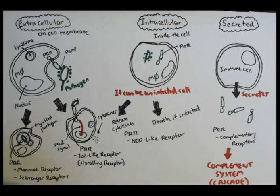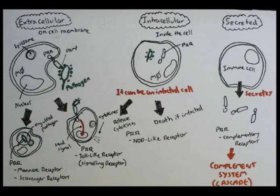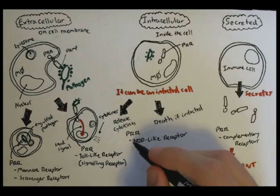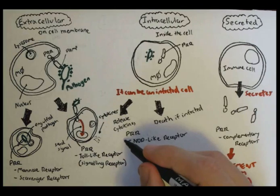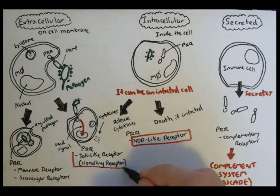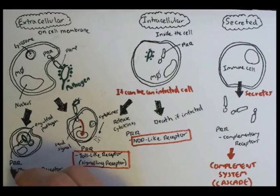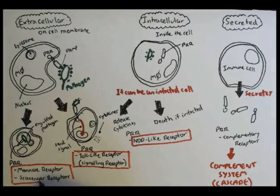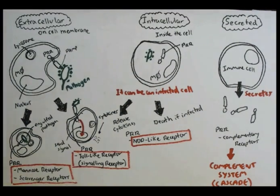This concludes the overview. We will look more into the NOD-like receptors, the toll-like receptors, and the scavenger and mannose receptors. This was a brief overview of PAMP — pathogen-associated molecular pattern — and PRR — the pathogen recognition receptors. Please click on the links for these different receptors to learn more about them.